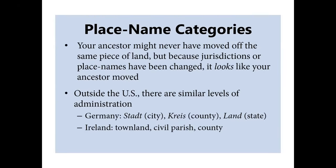A big part of understanding place name research is recognizing that your ancestor might never have moved off the same piece of land, but because jurisdictions or place names have changed, it looks like your ancestor moved — and you want to be sure you're making that distinction. Outside of the US, we see really similar levels of administration in most places. In Germany, we usually have the Stadt (city), in a Kreis (county), in a Land (state). And in Ireland, you have the townland, the civil parish, and the county, all in the country of Ireland.